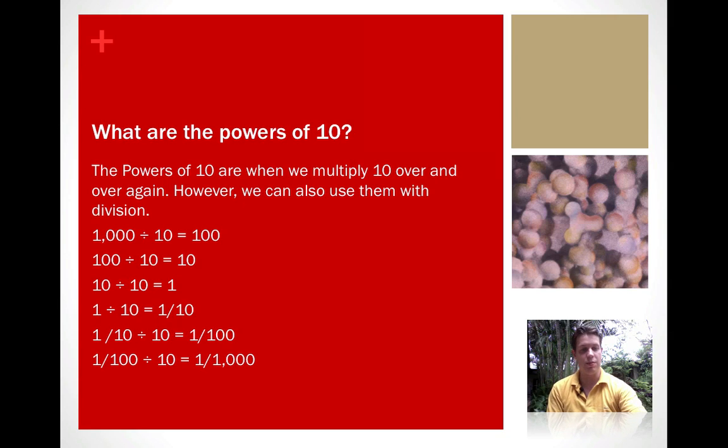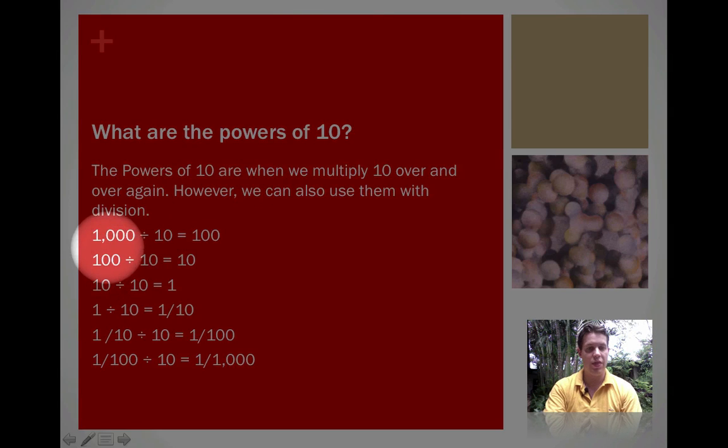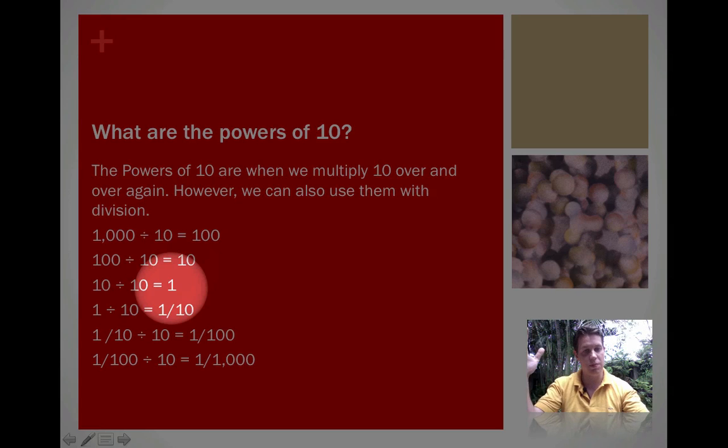So some example problems I have: 1,000 divided by 10 equals 100. If we take that 100 and divide it by 10, we get 10. If we take 10 and divide it by 10, we get 1. And if we look at this, this looks very much like what we saw with multiplying with powers of 10, except going in the opposite direction. Things are getting smaller rather than bigger.